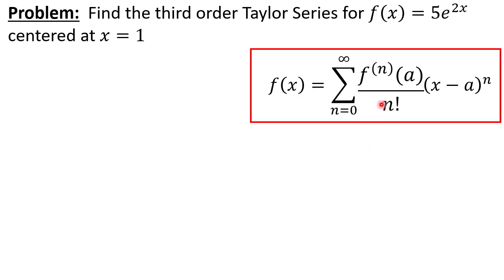We just plug this in for n equals zero, n equals one, n equals two, n equals three, et cetera, and if we do this and plug in an infinite number of terms we will actually get back our original function. So let's go ahead and apply this Taylor series to our function f of x equals five e to the two x.